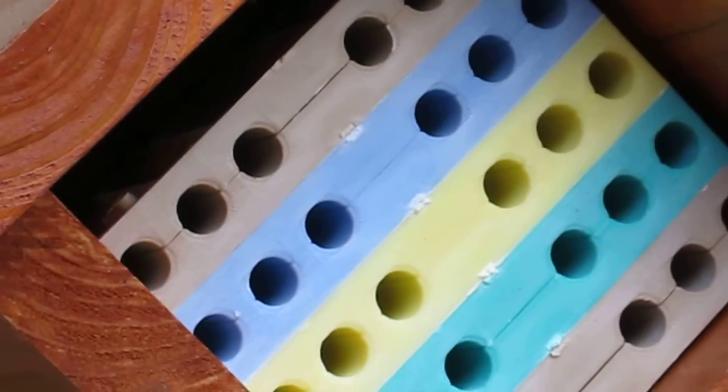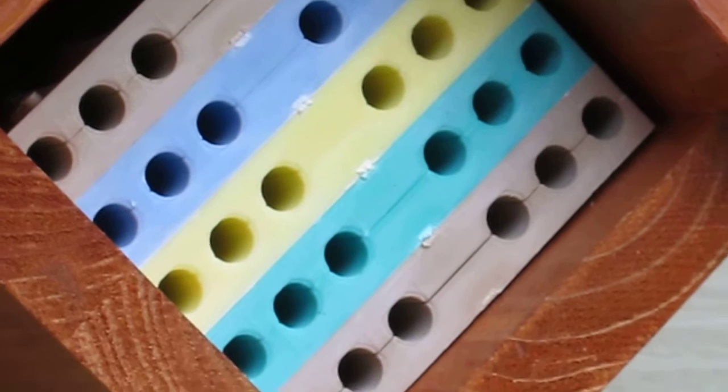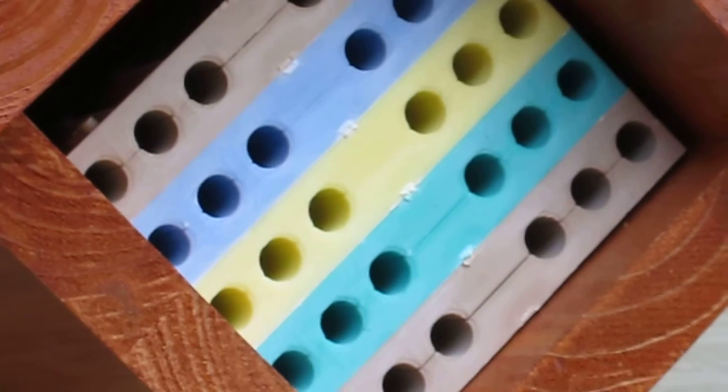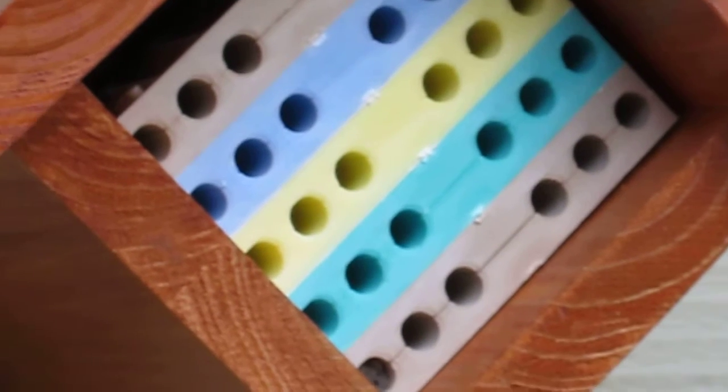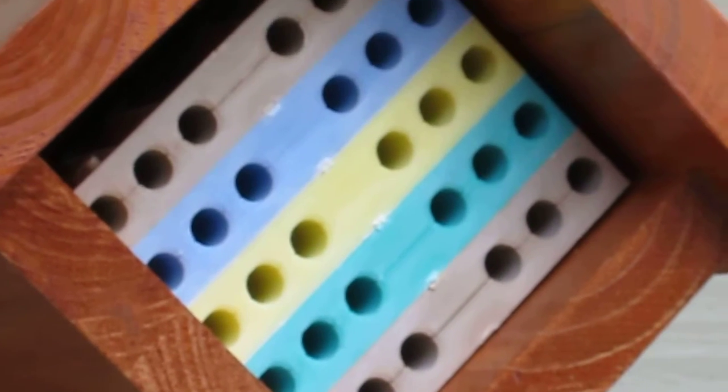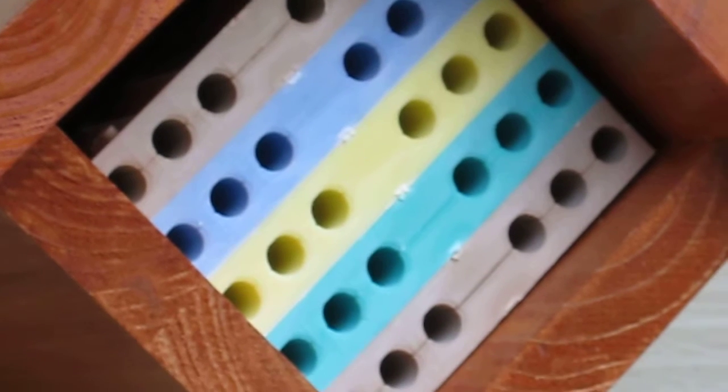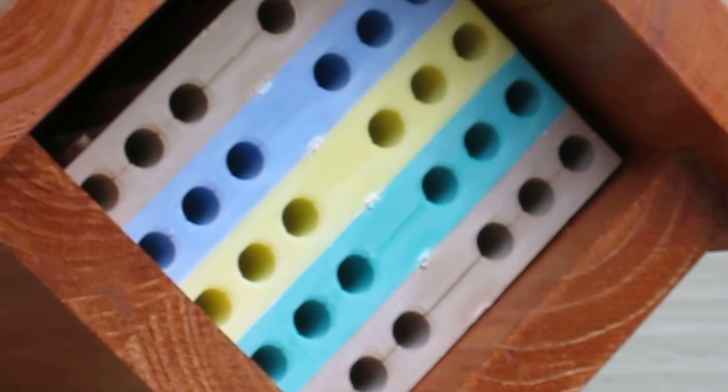In each one of those holes, a female mason bee, a queen, lays a whole series of eggs and pollen. She puts pollen next to the eggs for food.